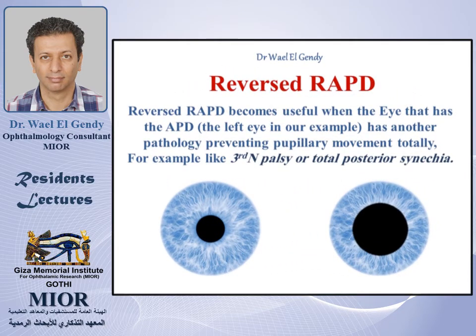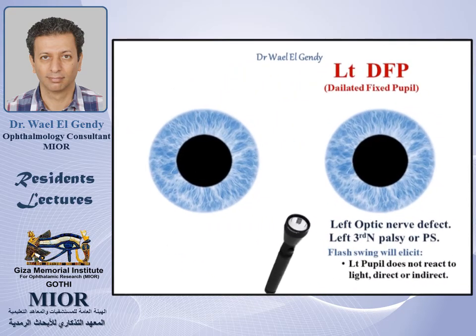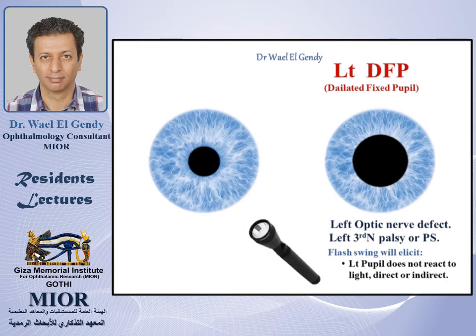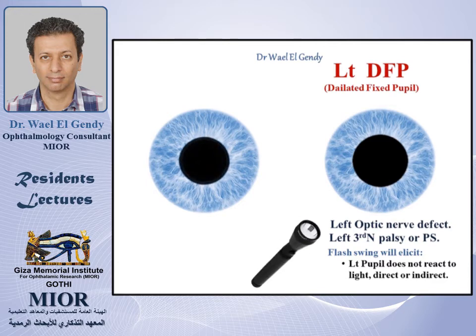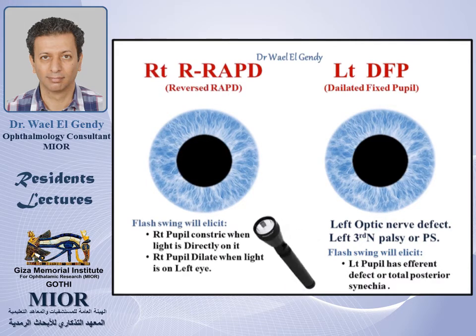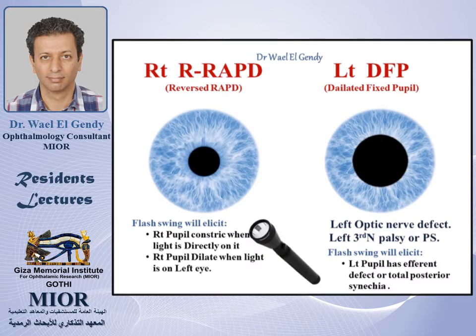A reversed relative afferent pupillary defect becomes useful when the eye that has the afferent pupillary defect — the left eye in our example — has another pathology preventing pupillary movement totally. For example, it has a third nerve palsy or a total posterior synechia. So this patient has a left dilated fixed pupil because of the afferent pupillary defect combined with third nerve palsy or posterior synechia. Because we have a dilated fixed pupil in the left eye, it gives us no clues, but the right eye will give us all the clues we need.